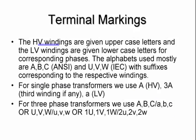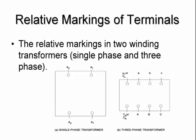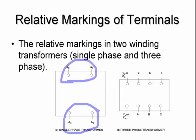The high-voltage windings are indicated by capital letters — in IEC notation it can be U, V, W — and for single-phase transformers, 3A if there's a third winding. For three-phase transformers, we use capital ABC and small letters ABC, or U, V, W in IEC. There is an example shown for single-phase transformers with the capital side and small letters, and the same for a three-phase transformer.